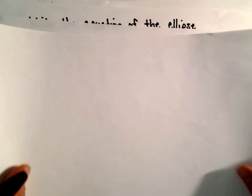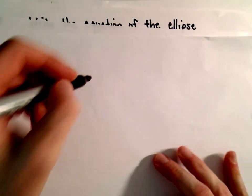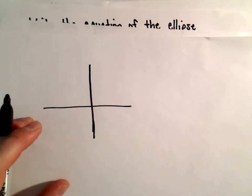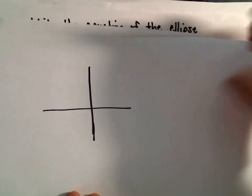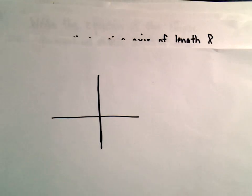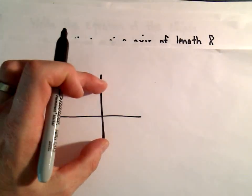So I'm gonna sketch a quick little picture here. Okay, so it's got a vertical major axis of length 8, and again a major axis is simply the length, the distance from one vertex to the other vertex.